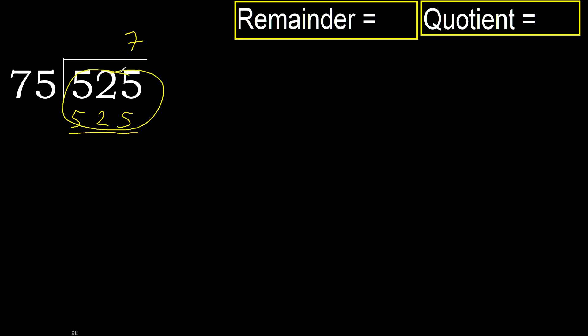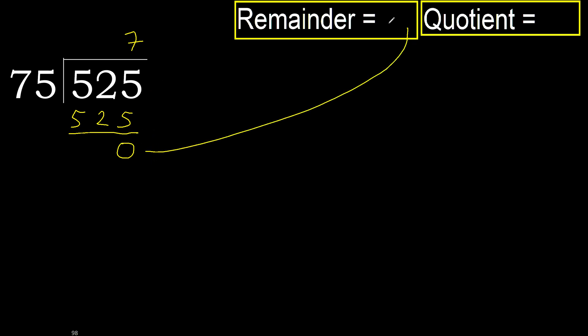Subtract: 525 minus 525 equals 0. Next — there is no next number, therefore we finish. 525 divided by 75 is 7.